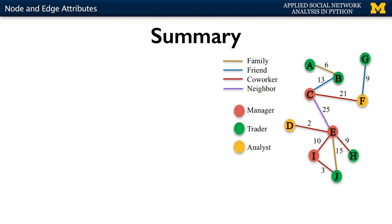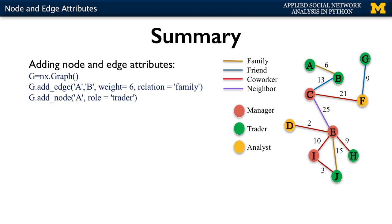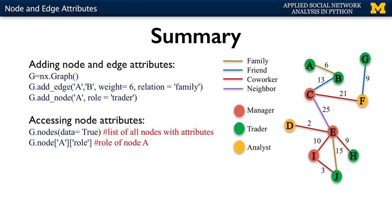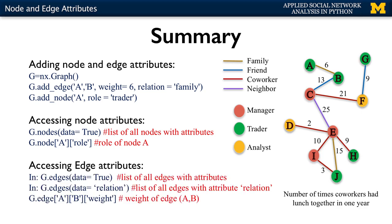In summary, in this lecture we looked at how to add and access attributes for both nodes and edges. Depending on what we want, sometimes we want a list of all the edges or nodes with their attributes, and sometimes we're interested in the attribute of a specific edge or node. Thank you for listening and I hope to see you in the next video.